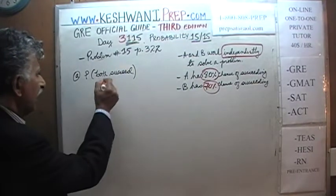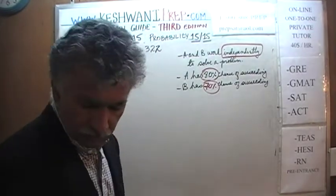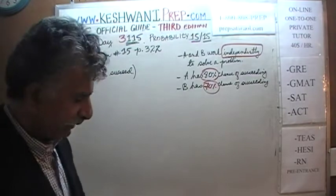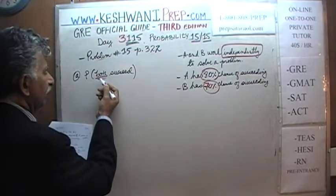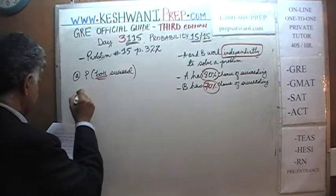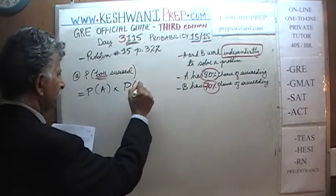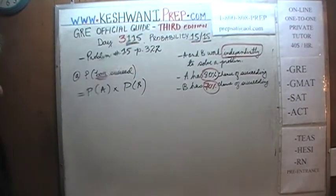Let's answer the question. What are the odds that they will both succeed? Well, because they are working independently, if the two events are independent, which they are here, then the odds that they will both succeed is simply the product of the two individual probabilities.